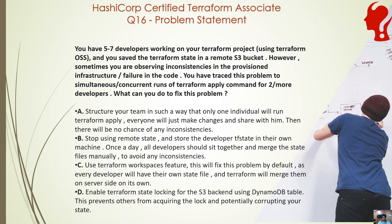Option C suggests using the Terraform workspace feature, claiming it fixes the problem by giving every developer their own state file, which Terraform will merge on the server side automatically. This is incorrect. Terraform workspaces with remote state do not give different state files per developer — you get different state files per workspace. For example, three workspaces (dev, QA, UAT) give three state files. Also, there is no concept of a Terraform server that does merging — it is just a remote backend acting as a storage layer for the TF state. Workspaces provide isolation between environments but do not solve this concurrency problem.